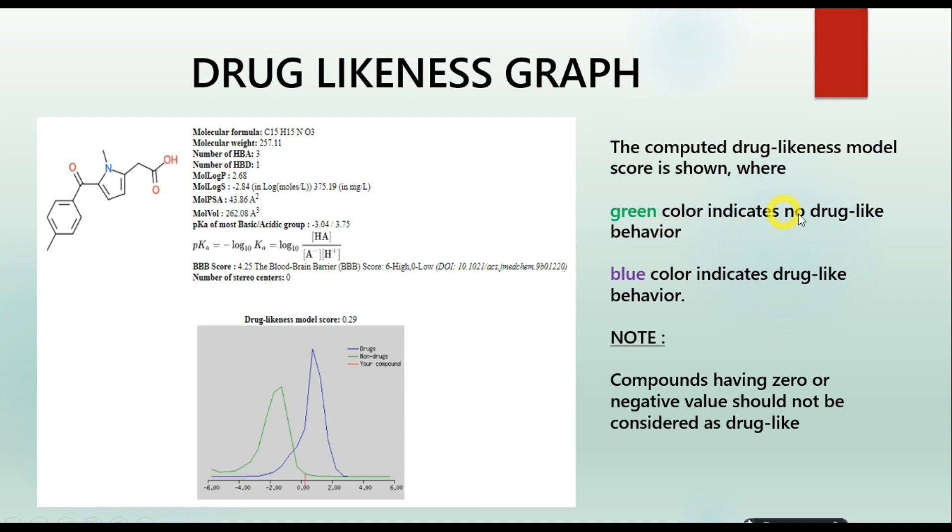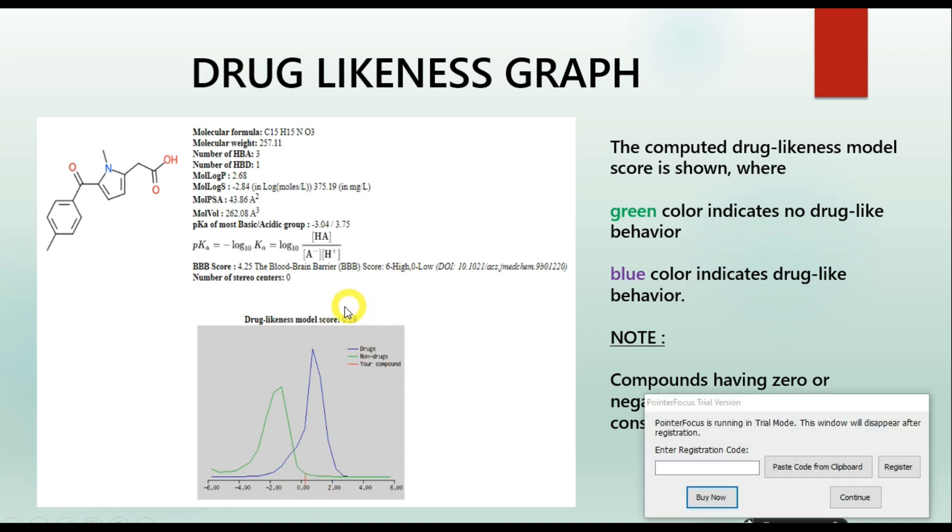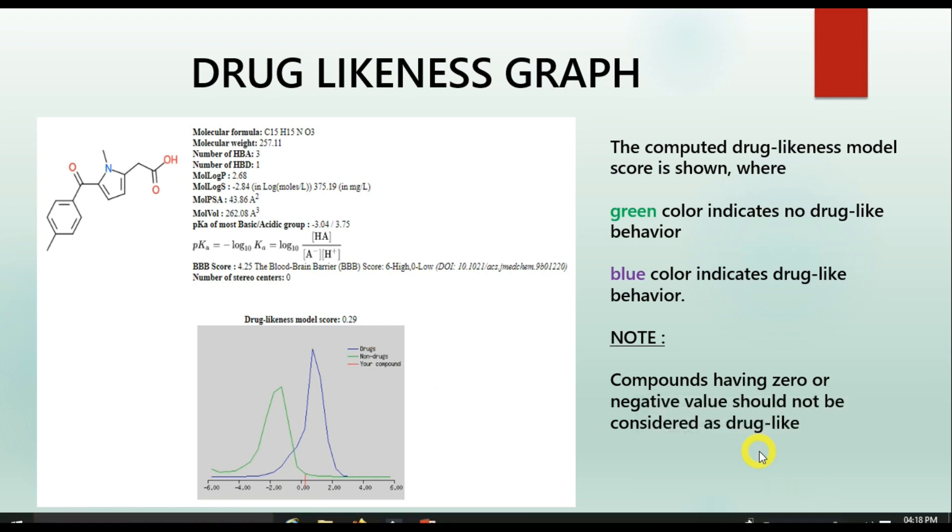The green color curve indicates no drug likeness behavior, and the blue color curve indicates drug-like behavior. You can find a small red line over here, which is our compound for investigation. And the red line falls under the blue region with a positive value of 0.29, which is shown at the top of the graph. If your compound is having zero or negative value of a drug score, it should not be considered to be a drug. In our case, the value is positive and greater than zero, and it also obeys Lipinski and Veber's rule. Hence, our compound is more likely to be a drug.